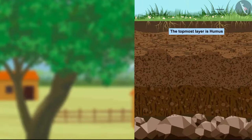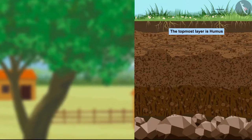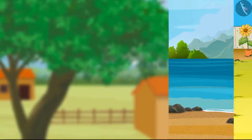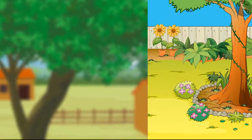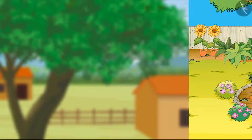Correct — it is humus, which is made up of dead and decaying matter. I have a question: is the soil similar at all places, or is it different at riverbeds, gardens, etc.? Let us go and look for the answer in a village where two children are in conversation about the same question.